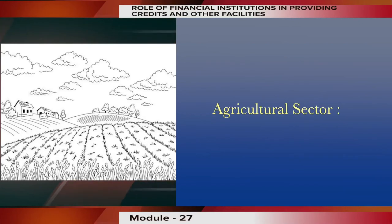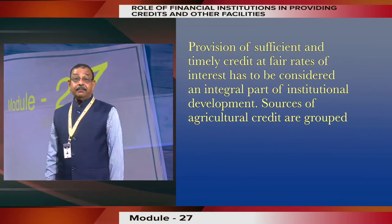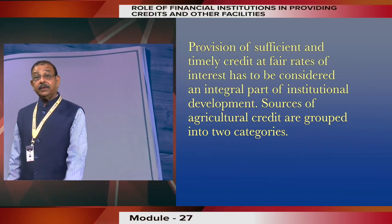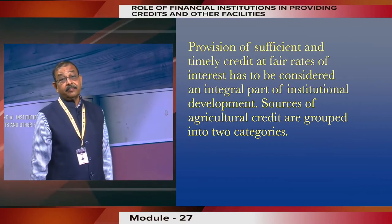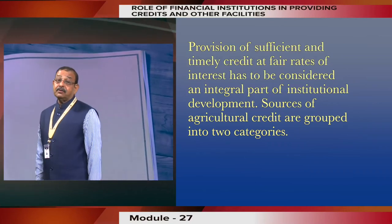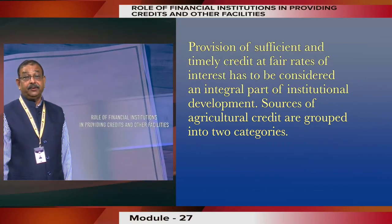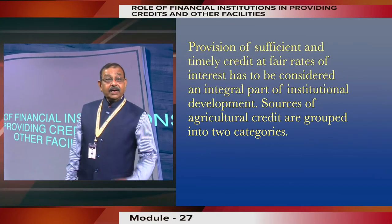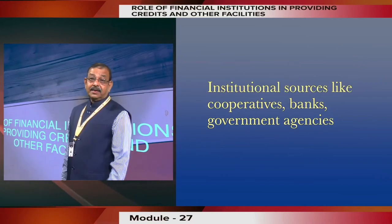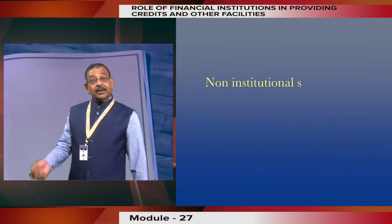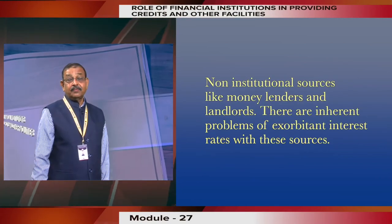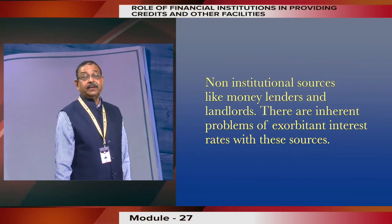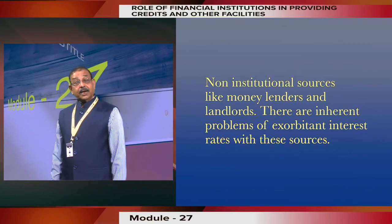Agricultural sector credit is very important. Provision of sufficient and timely credit at fair rates is essential; otherwise money lenders and mahajans charge exorbitant rates of interest. Sources of agricultural credit are grouped into two categories: institutional sources like cooperative banks, government agencies, and commercial banks; and non-institutional sources like money lenders, landlords, and mahajans — who have the inherent problem of charging exorbitant interest rates.